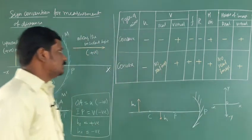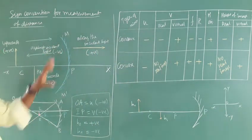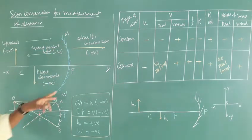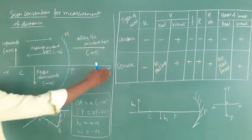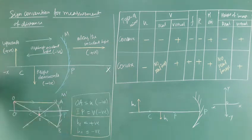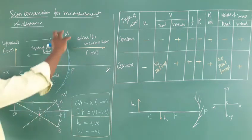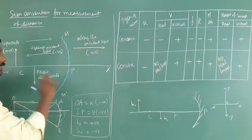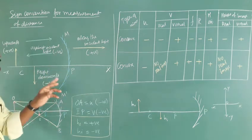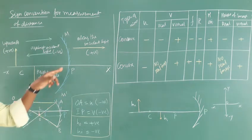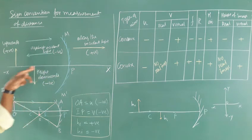Compare this with the mirror. Here mirror M and M-dash are shown. The pole P serves as the origin. Positive x axis goes to the right, negative x axis to the left, positive y axis upward, negative y axis downward. All distances are measured from the pole.